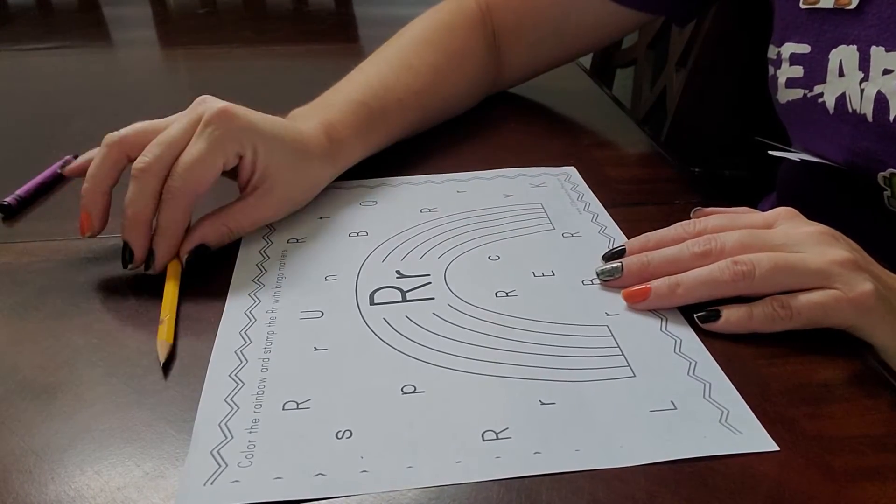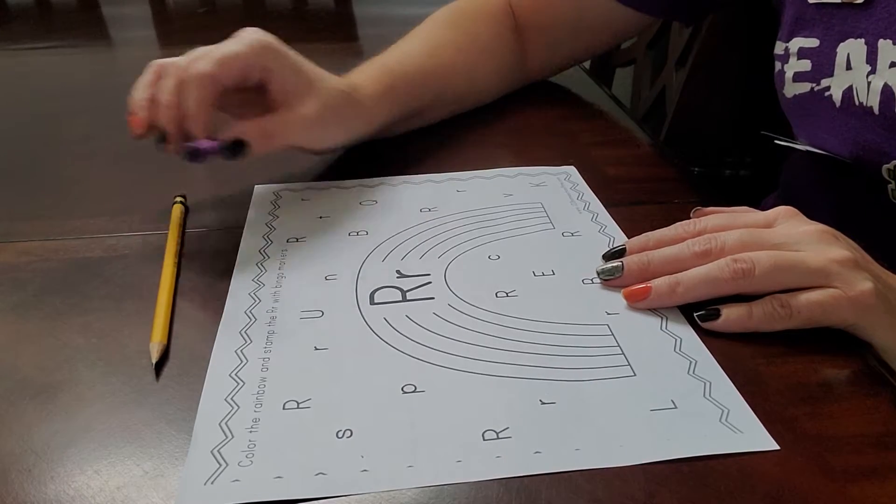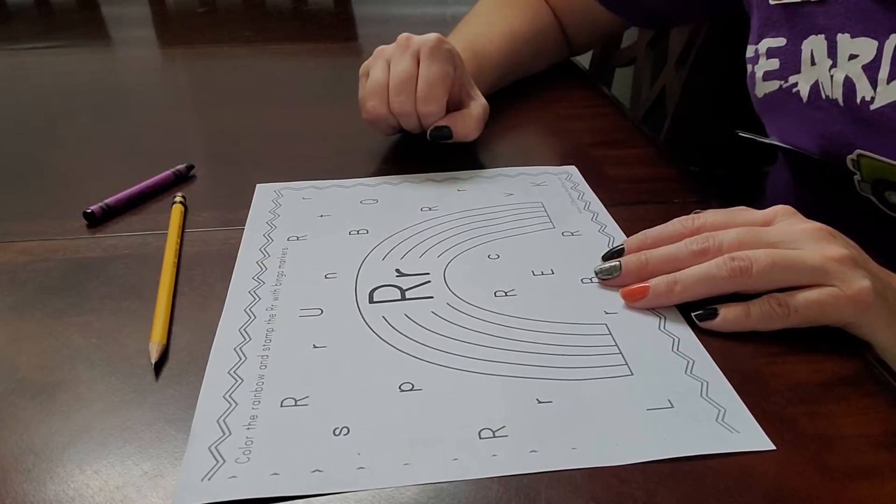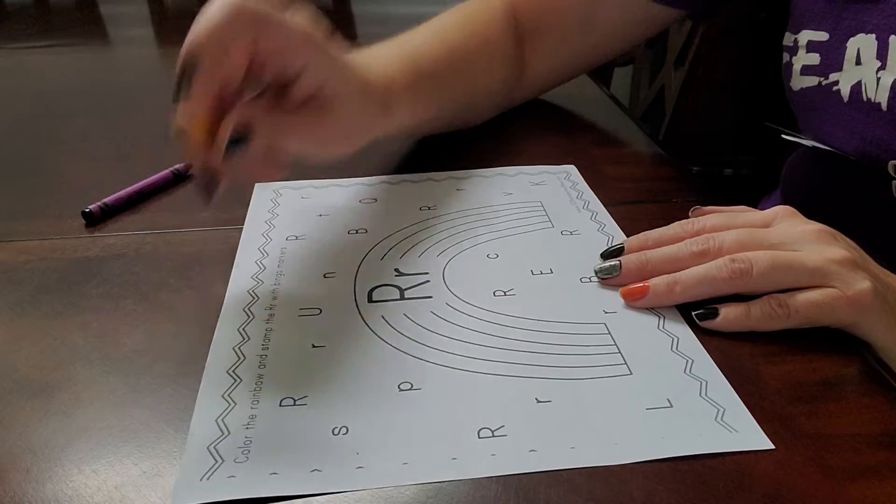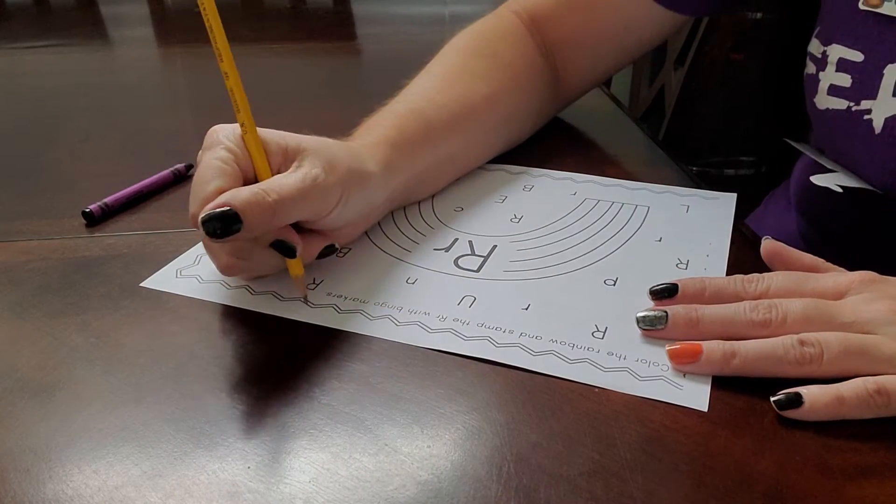For this activity you need your pencil and a purple crayon because that is our color of the week. So first things first, put your name at the top of the paper.